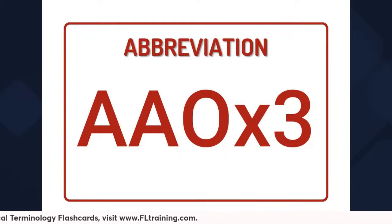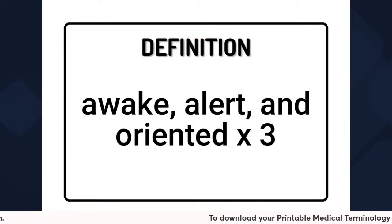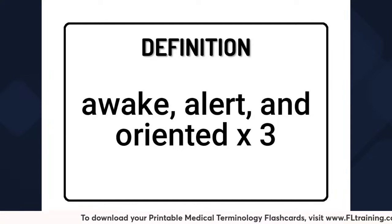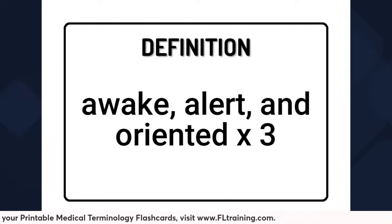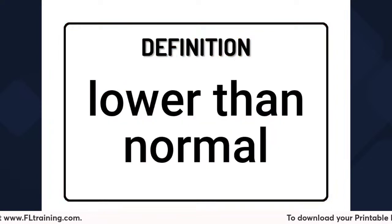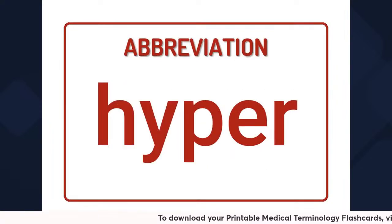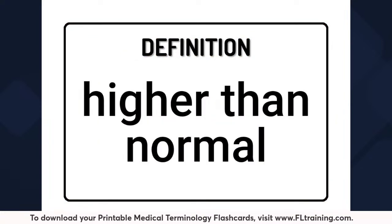A-A-O times three means awake, alert, and oriented times three — that means to person, place, and time. Hypo is the medical abbreviation that means lower than normal. Hyper means higher than normal.